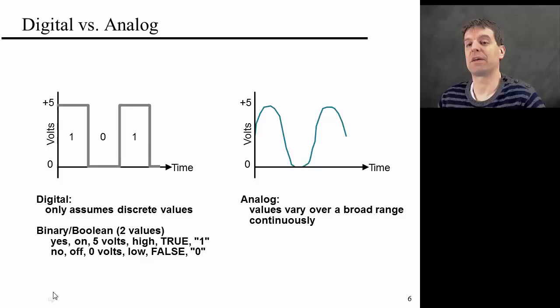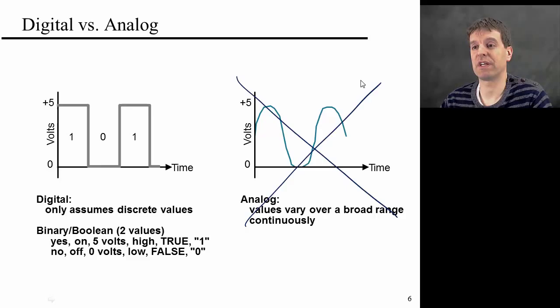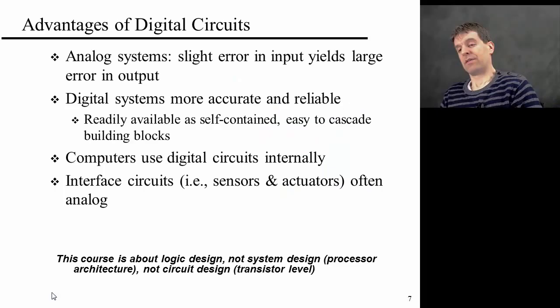You know, having seen these extremely basic examples of circuits that we can design, let me make a couple of high-level comments. So the first one is this distinction between digital and analog. Right? So in digital circuit design, or in digital circuits, we assume that we are working with discrete values. So binary or Boolean values, yes, on, high-voltage, true, one, is sort of one type of value, the positive value. No, off, low-voltage, false, zero. It's the opposite value. In contrast, in analog circuits, you essentially can have any intermediate values in addition to the high and low voltages.